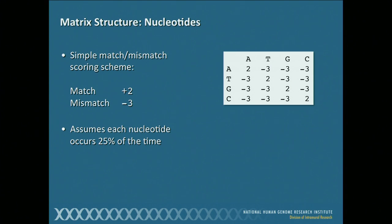Let's take the easy case first and look at a nucleotide scoring matrix. Here, a simple match-mismatch scheme is employed. If you look at this matrix, the four nucleotides are across the top and down the side. On the diagonal you see a bunch of twos — so if you had an alignment with two C's aligned with each other, for that particular position you're going to assess a positive score of two points. Every place off the diagonal you see minus three — so any time there is a mismatch, you deduct three points. This assumes each nucleotide occurs 25% of the time, which is close enough and is what's usually used.